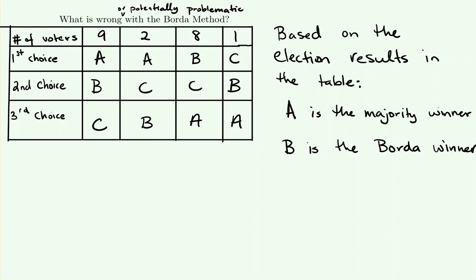With the Borda method there can be a potentially problematic issue: a candidate could win a majority of first-place votes but be very unpopular with everyone else, ranked last by those who didn't choose it first. In that situation, running the election under the Borda method could produce a different winner than a simple majority count. This table illustrates that: candidate A would win by majority, but candidate B would win under the Borda method.